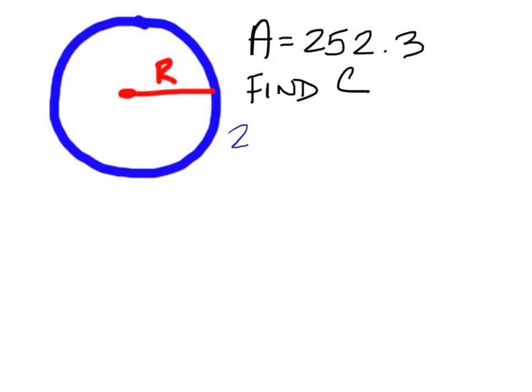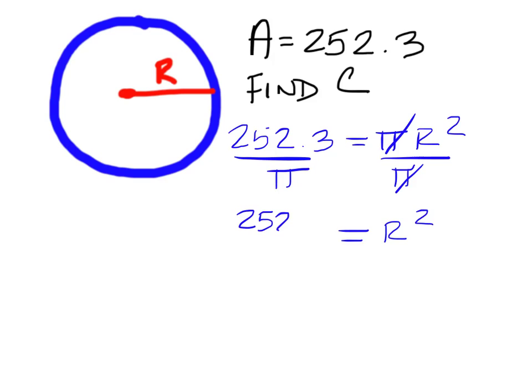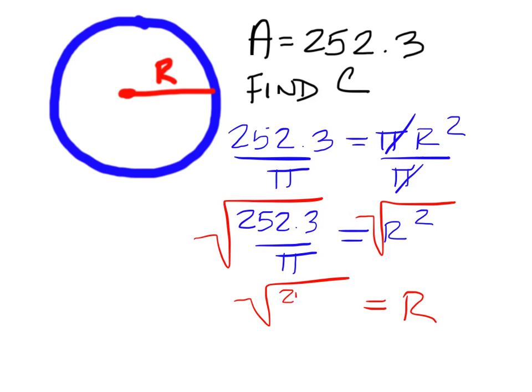You're given the area, so it should be 252.3 equal to pi r squared, and divide both sides by pi to eliminate the pi's on the right and be left with r squared. On the left, it's 252.3 over pi. You need the square root of both sides to get r by itself, and we'll go ahead and leave this the way it is, square root of 252.3 over pi. The formula for circumference, which is what you're finding, is c equals 2 pi r.